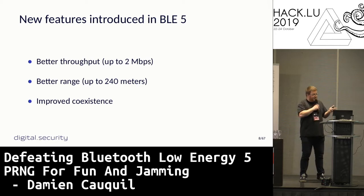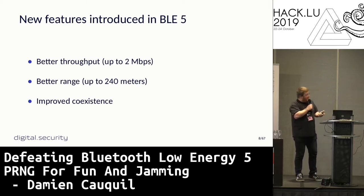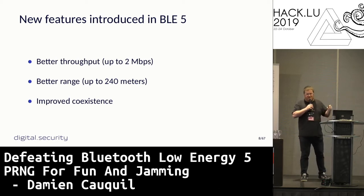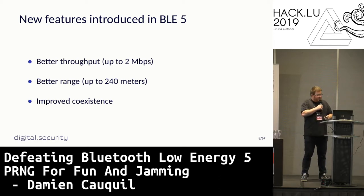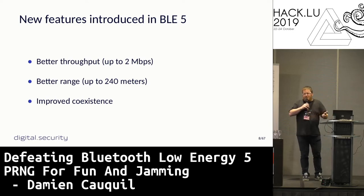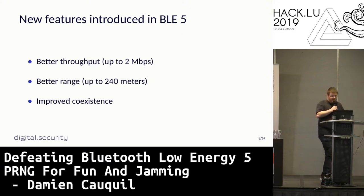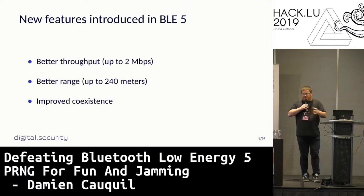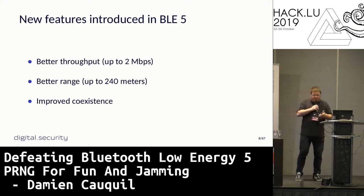So, what about BLE 5? The new version provides some improvements: you get better throughput — data exchange goes up to 2 megabits per second, double the speed. You get better range — with BLE 5 you can communicate up to 240 meters away, compared to maybe 10 to 20 meters with BLE 4. They also improved coexistence, so you can get more devices in the same room without experiencing collisions and connection disruptions.